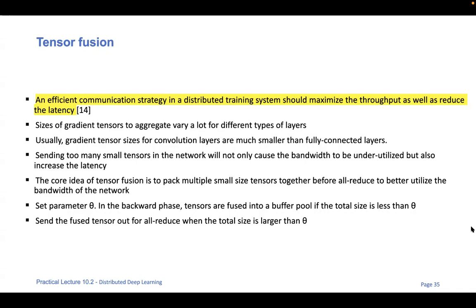At some point you want to reduce communication in order to save time — and time is money. Instead of exchanging small chunks of local gradients between devices, you can group them in a smart way so that you exchange data when you reach some threshold that is optimal for minimizing — optimizing the ratio between computation time and communication time between GPUs. This is called Tensor Fusion, and most recent frameworks for distributed deep learning implement some sort of Tensor Fusion that you can activate with flags.